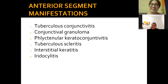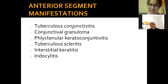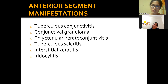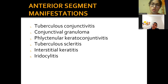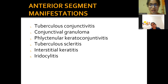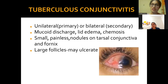Moving to anterior segment manifestations, which include the conjunctiva, cornea, and iris. Clinical manifestations include: conjunctivitis, conjunctival granuloma, phlyctenular keratoconjunctivitis with nodules on the cornea and conjunctiva, tuberculous scleritis, and interstitial keratitis. These may not present as isolated features — they can occur as combined clinical manifestations.